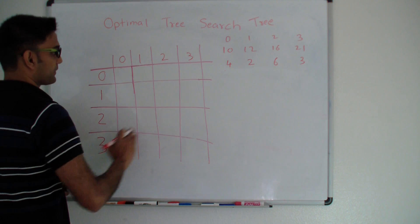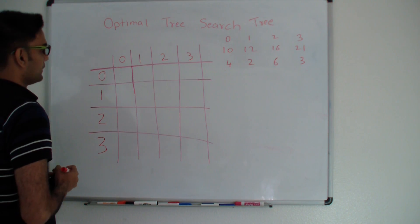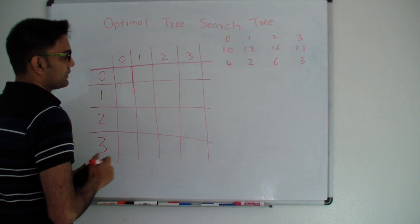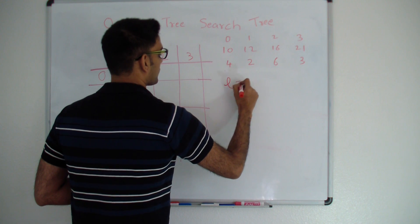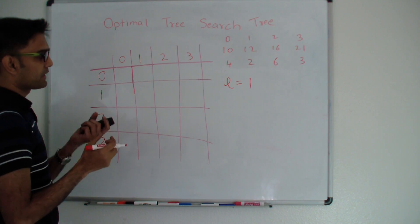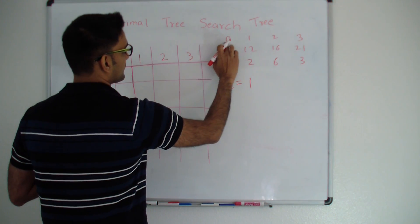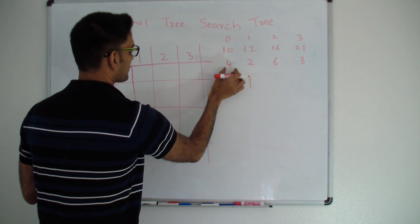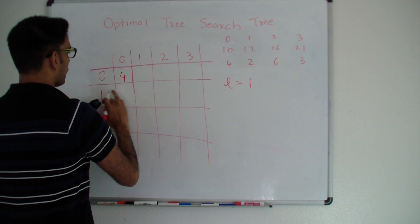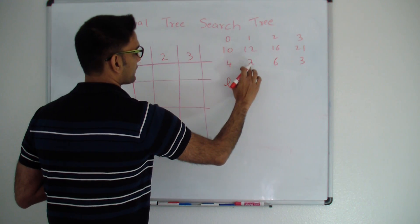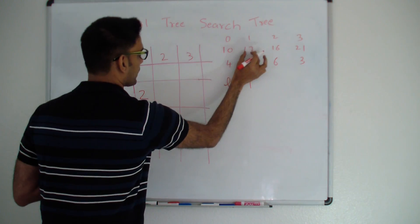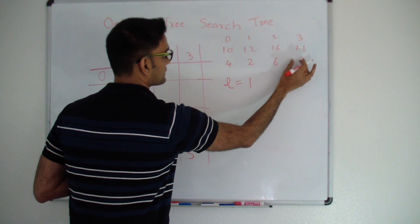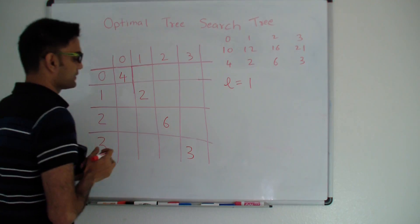Here I have a 4×4 matrix because the total number of keys I have is 4, with index 0 to 3. I'm going to fill up this matrix and my answer will be in the top-right cell. Let's start with L equal to 1 — considering 1 key at a time. For cell (0,0), the key at index 0 has frequency 4, so the cost is 4. For (1,1), the key has frequency 2, so cost is 2. For (2,2), cost is 6. For (3,3), the key is 21 with frequency 3, so cost is 3.